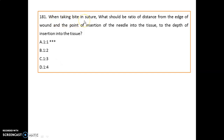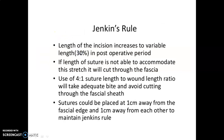When taking a bite in a suture, the ratio of distance from the edge of the wound at the point of insertion of the needle into tissue to the depth of insertion is 1:1. There is also Jenkins' rule: the suture length to wound length ratio is 4:1. Sutures should be placed 1 cm from fascial edges and 1 cm apart from each other.